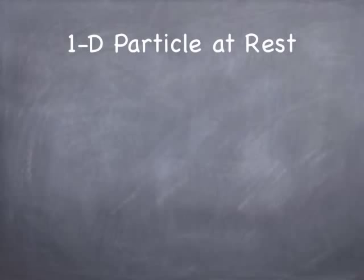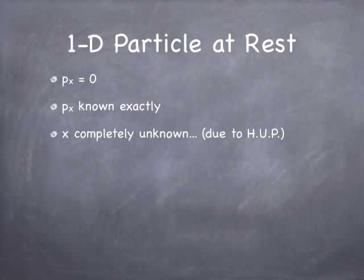So let's think about the simplest possible situation we can imagine, and that probably is a single particle at rest. Now if it's at rest, what do we know about its momentum? Well, we know its momentum is zero. But if we know its momentum is zero, that means we know its momentum exactly. But if you think about the uncertainty principle, if you know the momentum exactly, that means the uncertainty in the position must be infinite. So we don't know its position at all. X is completely unknown.